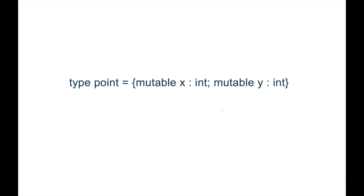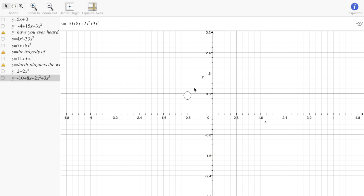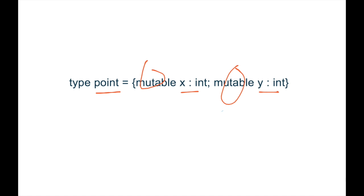So let's look at this example. We have this type point, and the point record has two fields. It has an X and a Y. Now if you think of a point on a Cartesian plane, you might want that point, you might want to change the X and Y position of that point.